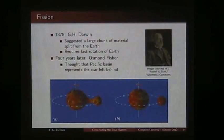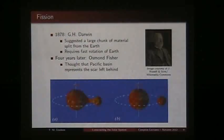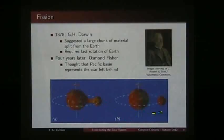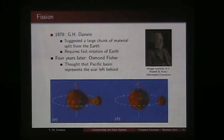The first is what we call fission, suggested by George Darwin — Charles Darwin's son — in 1878. He suggested that possibly a large chunk of material split away from the Earth as it was spinning very fast, and this chunk formed what we now know as the moon. Four years later, a geologist called Osmond Fisher looked at the Pacific Basin, thought it looked nicely round, and suggested it could be the scar left behind from this chunk of material splitting away from the Earth.